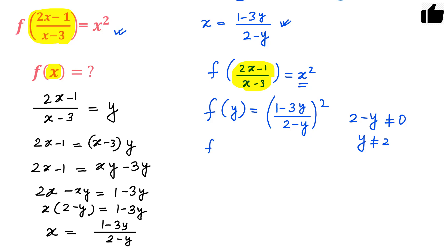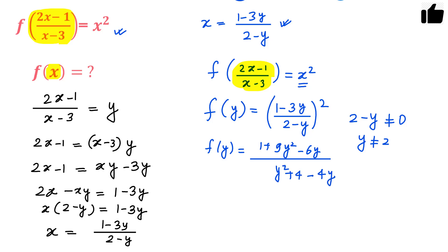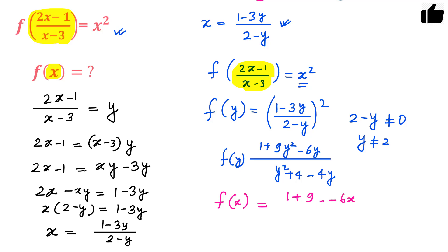If you want, you can expand this. So f(y) equals (1 plus 9y squared minus 6y) divided by (y squared plus 4 minus 4y). Since the question asks for f(x), replace y everywhere with x to get f(x) equals (1 plus 9x squared minus 6x) divided by (x squared plus 4 minus 4x).